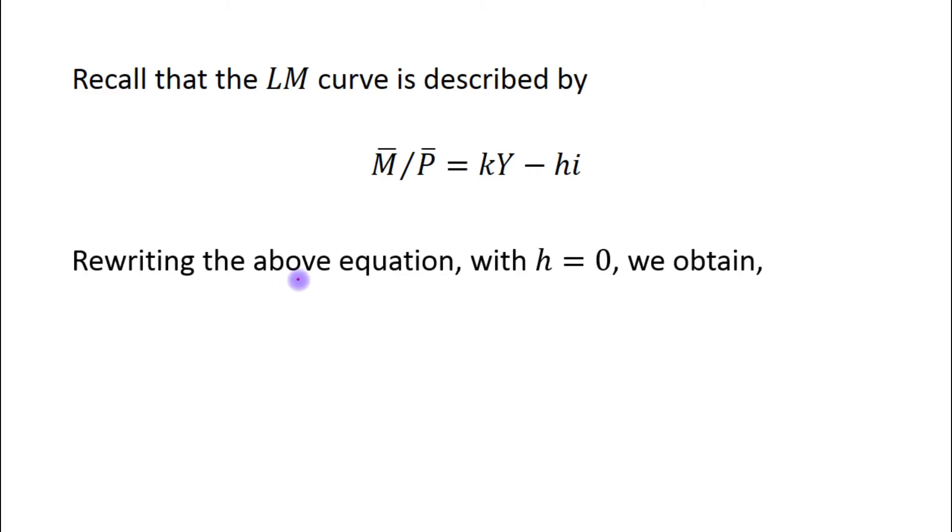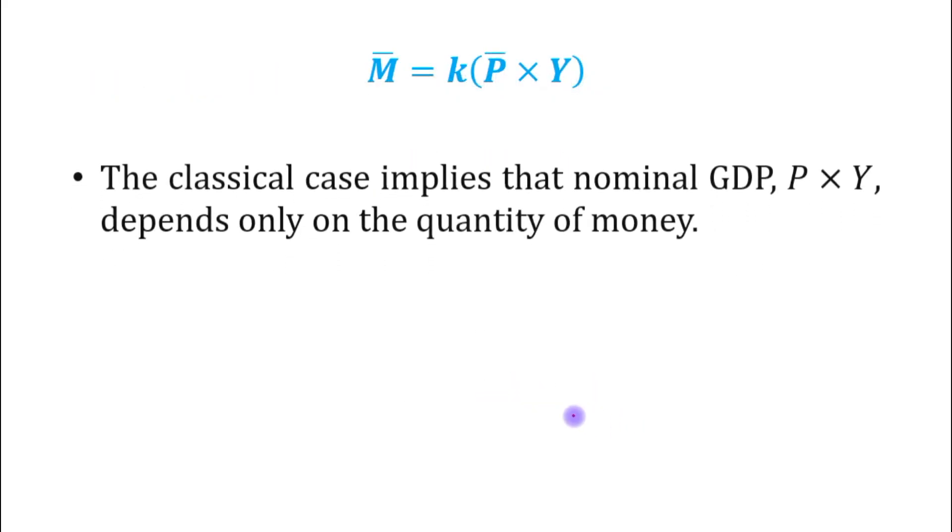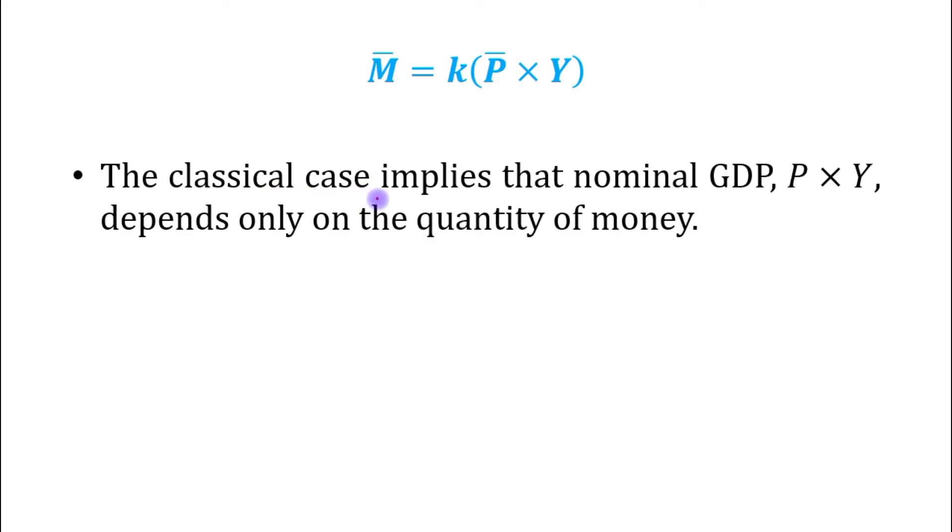Rewriting the above equation with h equals zero, we obtain M bar upon P bar equals ky. And in the next step, we can write it in this form. The classical case implies that nominal GDP, P times Y, depends only on the quantity of money.